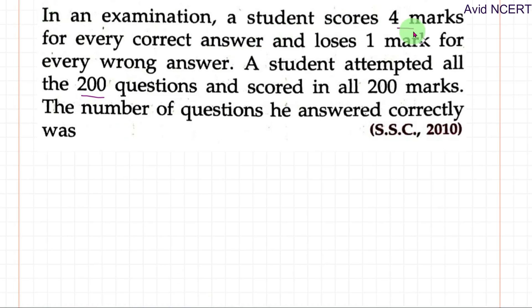In an examination, a student scores four marks for every correct answer and loses one mark for every wrong answer. A student attempted all the 200 questions and scored in all 200 marks. So the number of questions he answered correctly was supposed to be found.